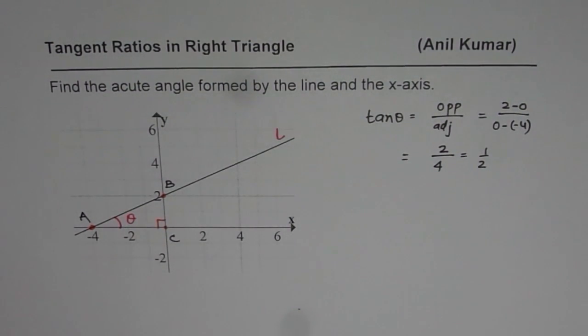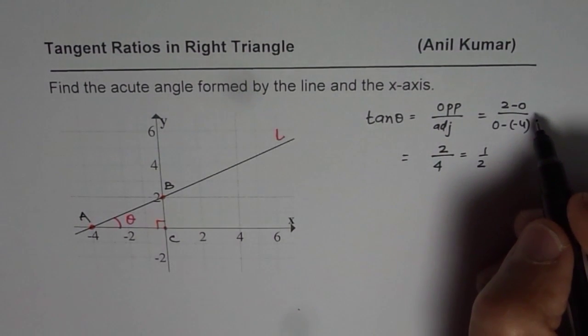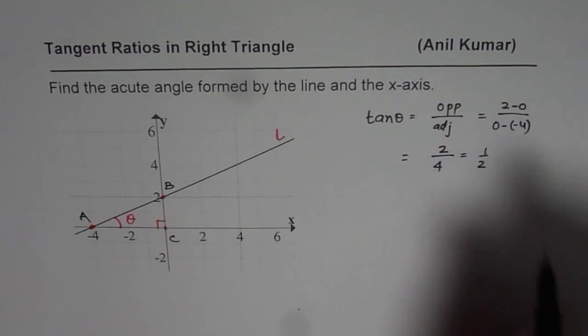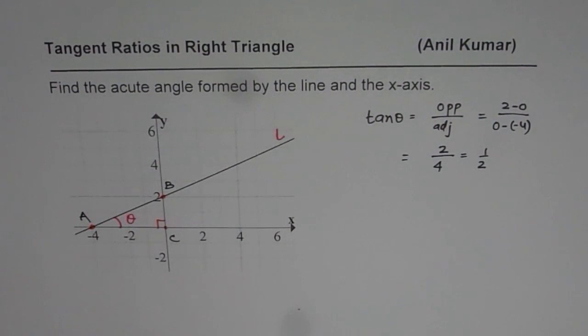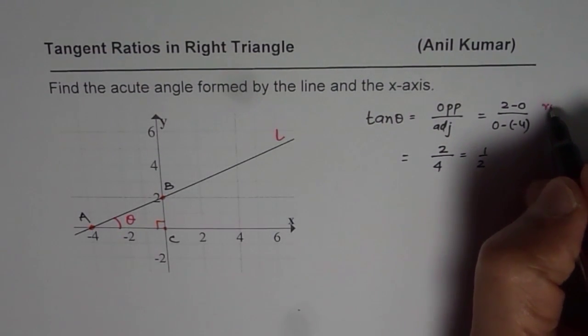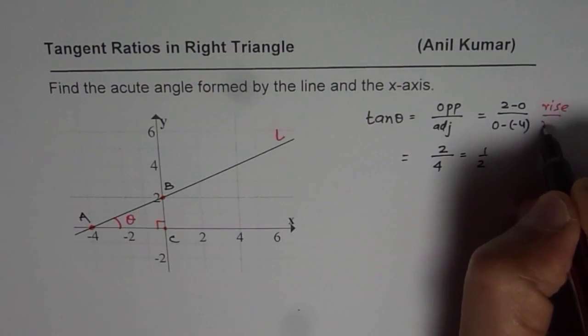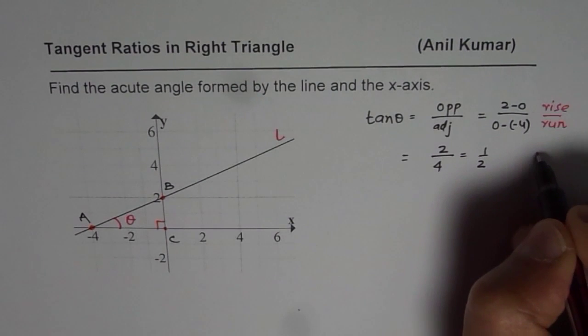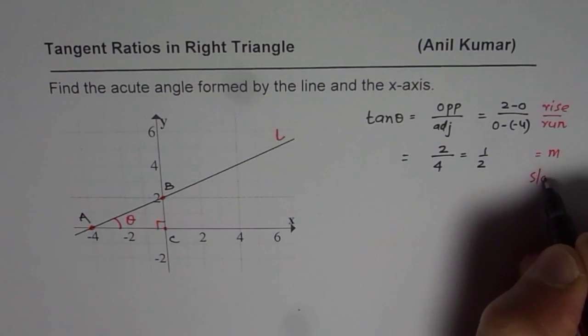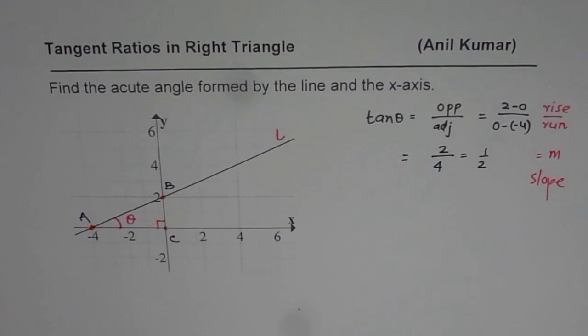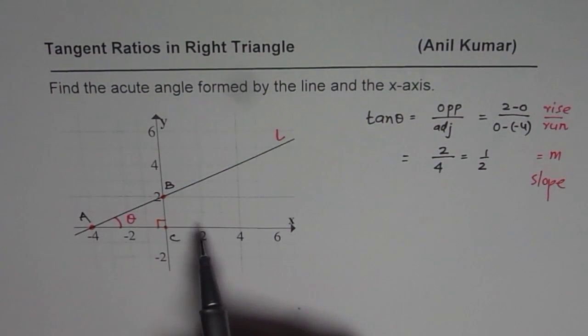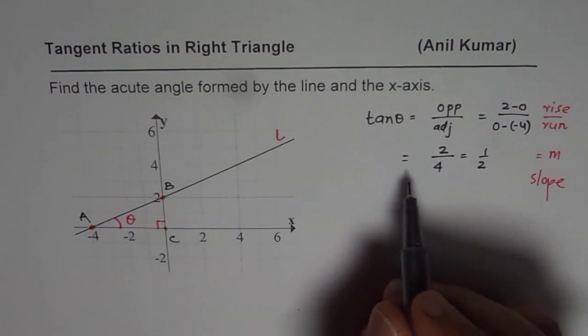Now, this is again a reminder to you that tan theta is equal to what? Let me write in a different ink so that you remember. For a line, it is rise over run. And that is equal to M, the slope. So, tan theta represents slope of a line. That is why they are so well connected. And actually, we started from here, if you remember, to understand what tangent is.